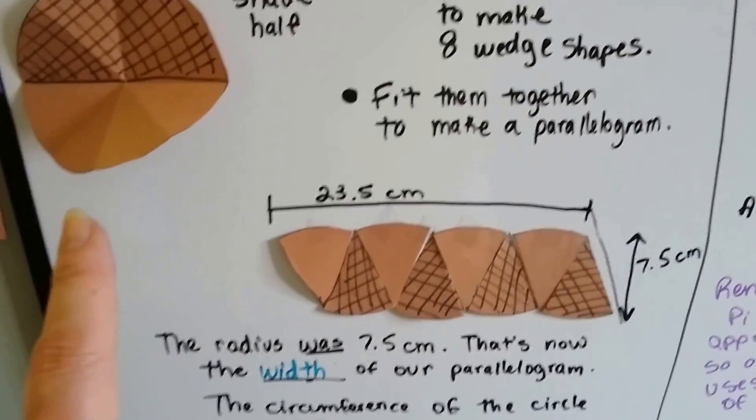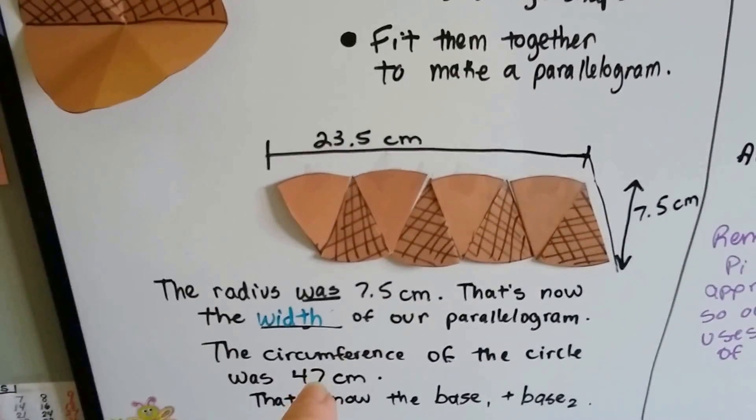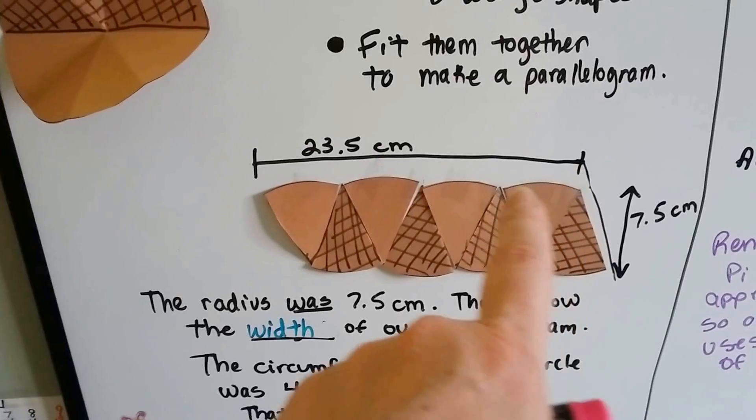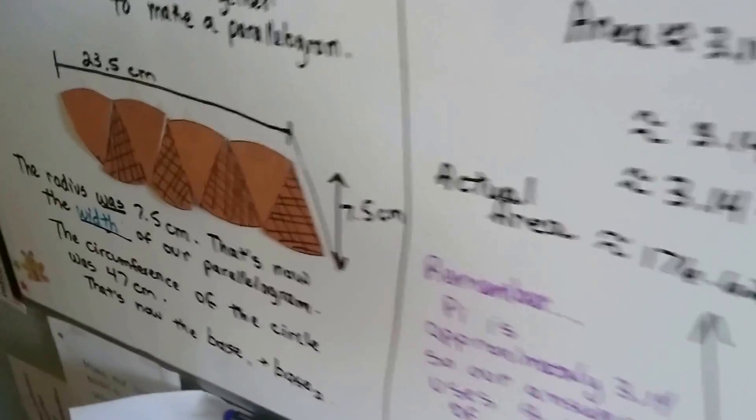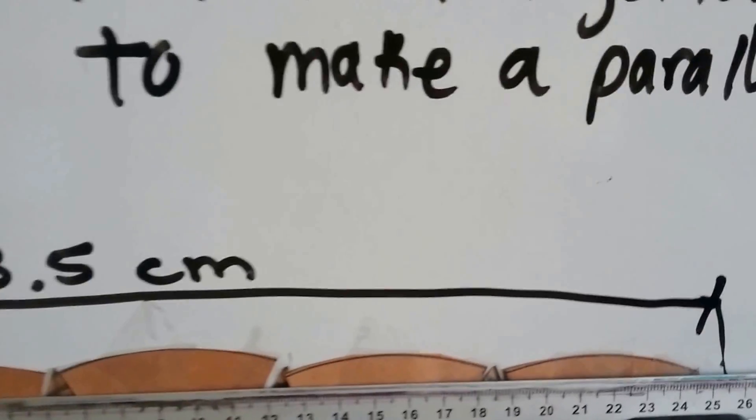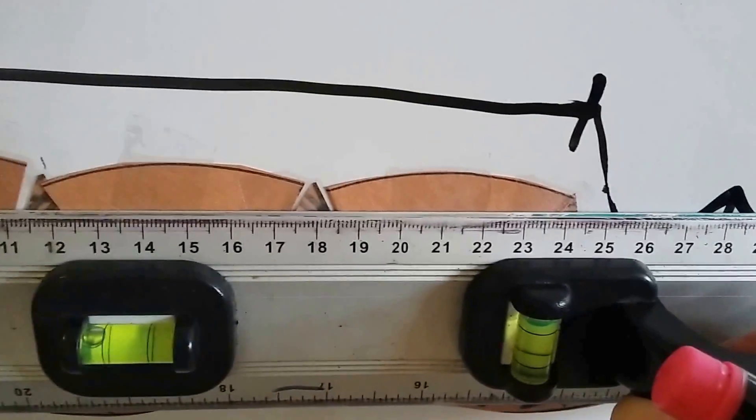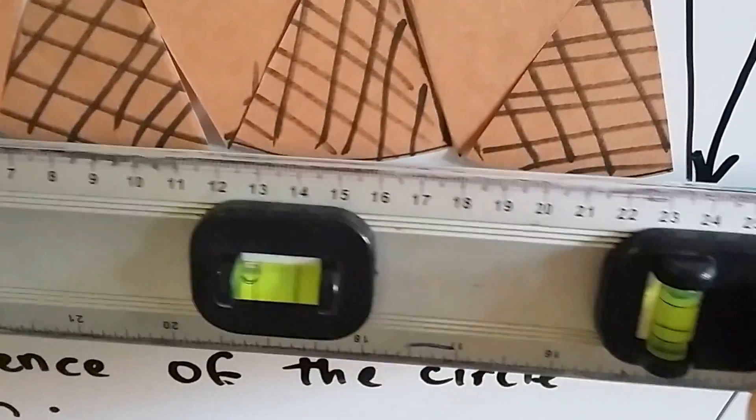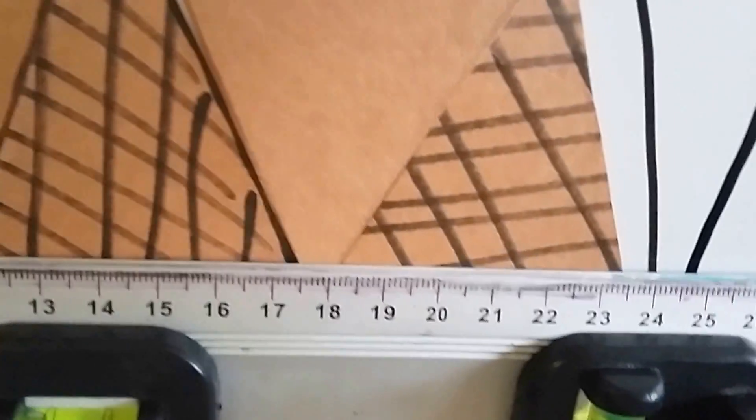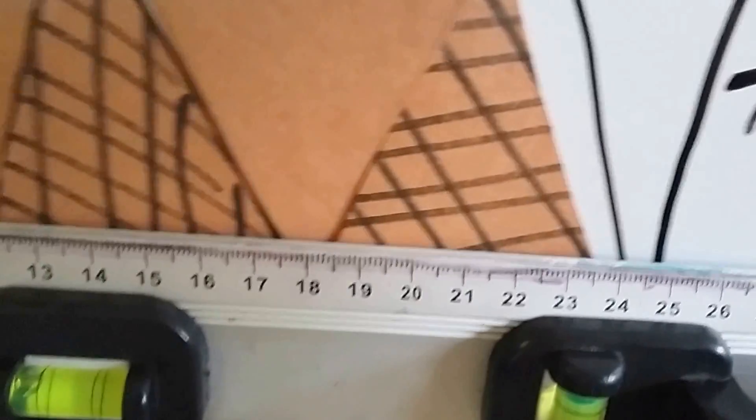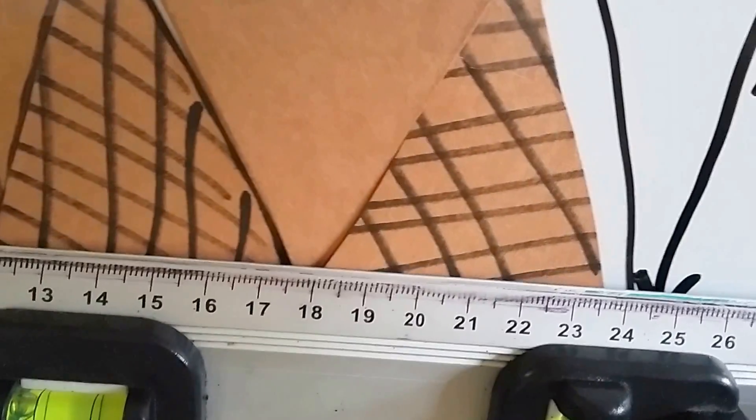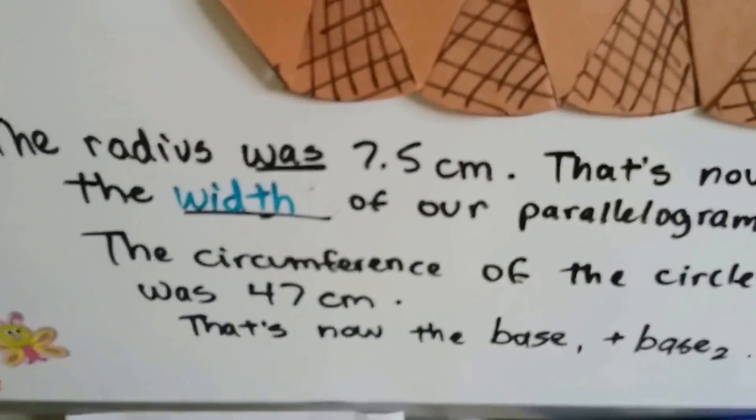I knew that my circumference was 47 centimeters. When I measured this with my metric measure, I was really surprised to see that when I lined it up along here, it comes out to 23.5 centimeters. Do you see that? Well, that's half of 47.